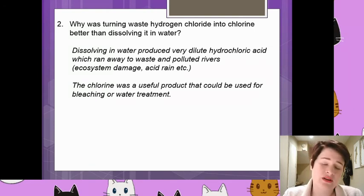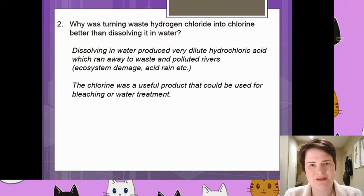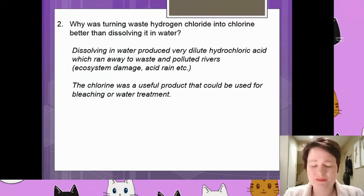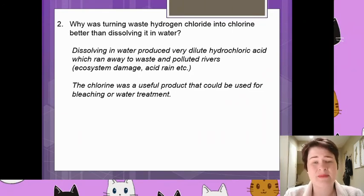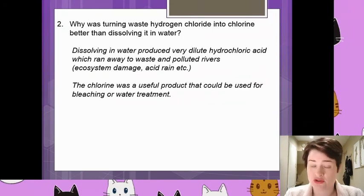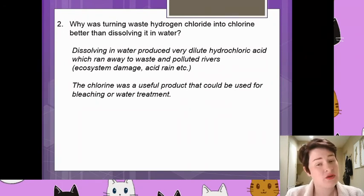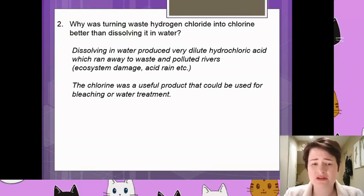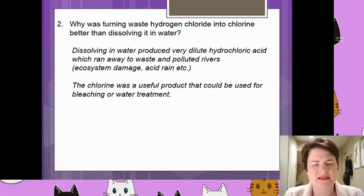However, what Henry Deacon came up with was significantly better, because instead of hydrogen chloride being a waste product, it ended up being a useful product — a co-product, as we sometimes call it. When you get a product that's not necessarily what you intended but is still quite useful, it is called a co-product. The chlorine was a useful product that could be used for bleaching, water treatment, and other reactions, usually to do with medicines or cleaning.